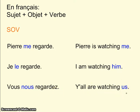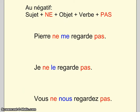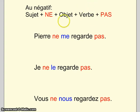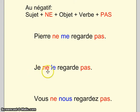C'est très important qu'au présent, dans une phrase, vous avez sujet, objet, et verbe. Quand vous avez une phrase au négatif, c'est un peu différent. Vous avez le sujet, objet, et verbe dans la même place. Mais vous avez ne et pas aussi. Ne et pas sont autour — around — le verbe conjugué. Mais l'objet précède le verbe. Regardez: Pierre ne me regarde pas — sujet, objet, verbe — mais aussi ne et pas autour du verbe conjugué. Je ne le regarde pas. Vous ne nous regardez pas.